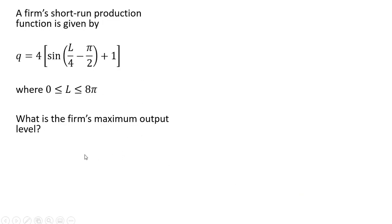What we want to find now is the firm's maximum output level. So we're going to do that by taking the marginal product of labor, and setting the marginal product of labor equal to zero, and then solving for L.